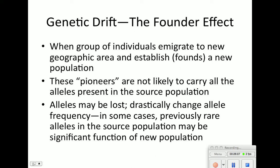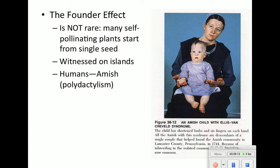Examples include the Amish people, who seclude themselves and don't mate with the outside world — polydactyly (having six fingers) is very common in Amish populations due to the founder effect. Founder effects are also witnessed on islands, which are great examples. Many self-pollinating plants start from a single seed. Here's an original population — a select few leave, start a new population, and the descendants look quite different from the original.